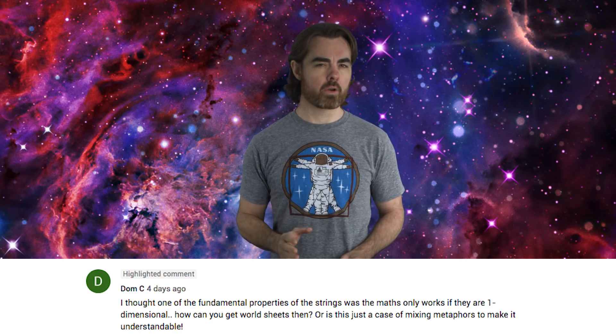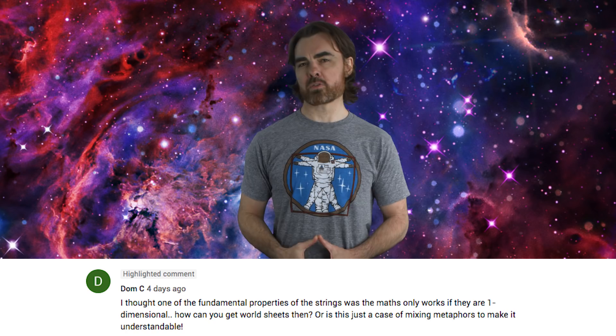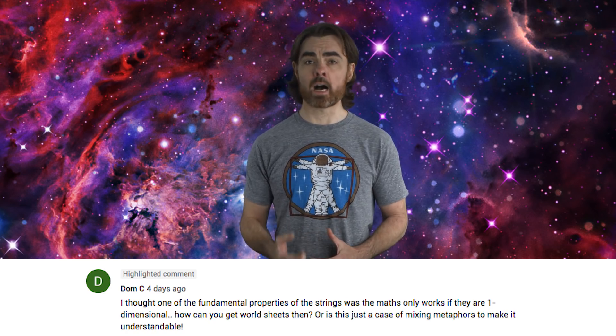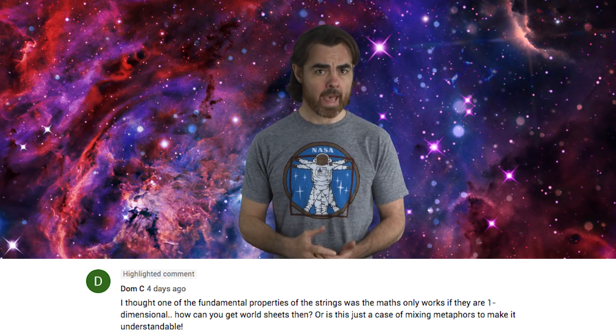Dom C asks a good one: I thought one of the fundamental properties of the strings was that the maths only works if they are one dimensional. So how can you get world sheets? Yes, it is a pain keeping the number of dimensions straight in string theory. Weyl invariance only works for the 2D world sheet, which has one dimension of space and one of time. This is the shape traced out by a string moving through time. A 2D world sheet has to be traced by a 1D physical object. So yeah, the math of string theory only works for 1D objects because these trace 2D world sheets.